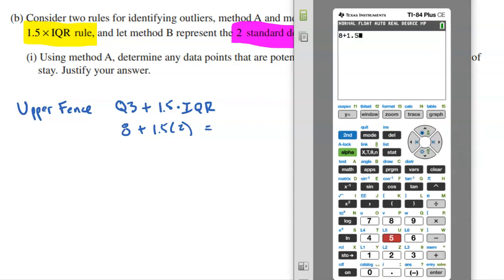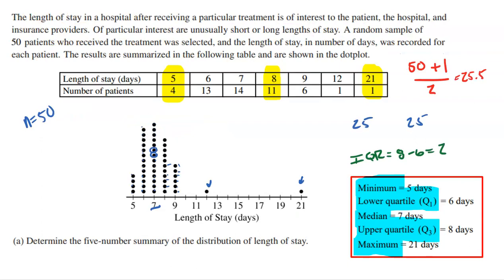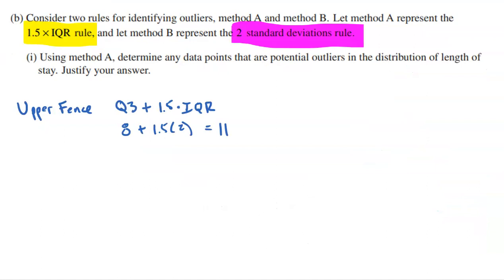The math's pretty simple here. Taking Q3, adding 1.5 times the IQR gives me 11. That means anybody staying more than 11 days would be considered an outlier. If I go back to my data, I had two people stayed more than 11 days, the 12 and the 21. So I have two upper outliers, 12 and 21 days are both upper outliers.